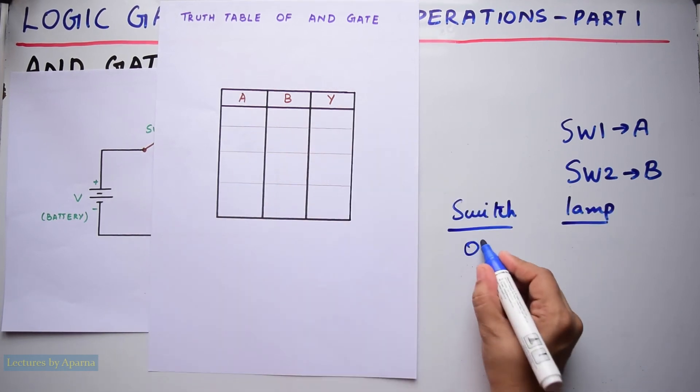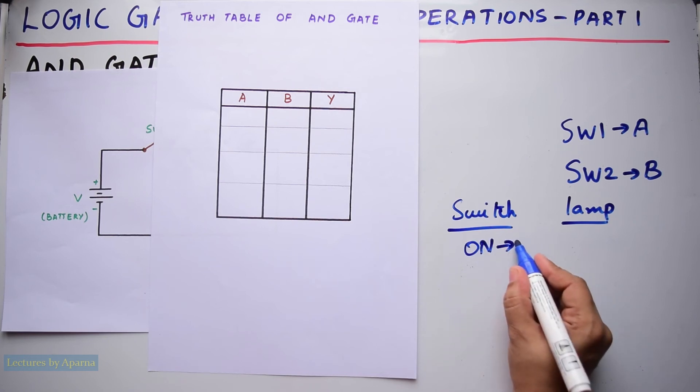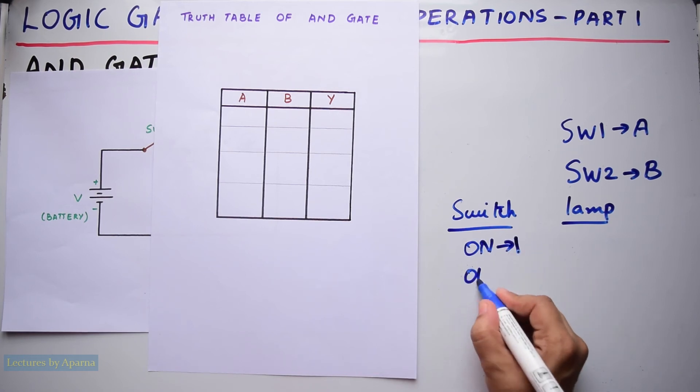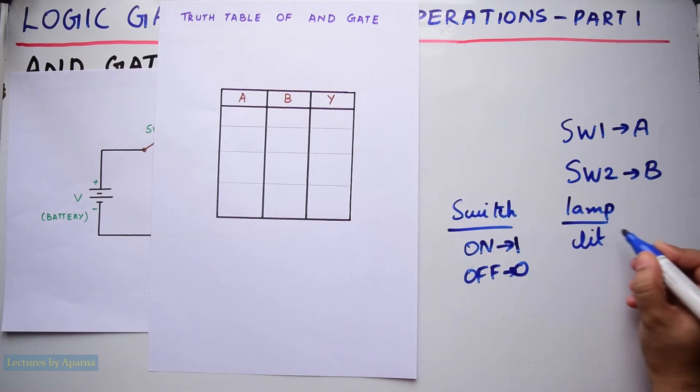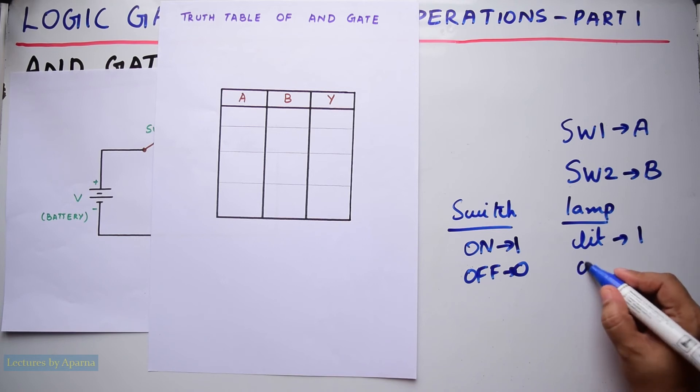When the switch is ON we take it as a logic 1. When it is OFF we take it as a logic 0. The lamp can be considered as the binary output of the AND operation, which is Y. So when the lamp is lit we take it as a logic 1, and when the lamp is OFF we take it as a logic 0.